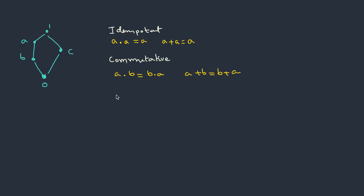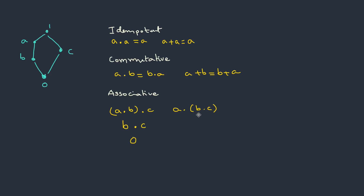How about associativity? When we do the meet operation on A and B, the meet of A and B is B, then meet with C. Meet of B and C is 0. On the other side, meet of B and C is 0, then meet of A and 0 is basically 0. We see that these two are equal, so it follows the associativity property. Similarly, we can prove it for join as well.